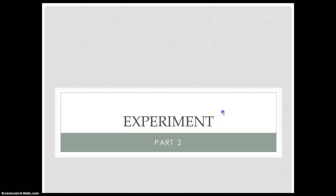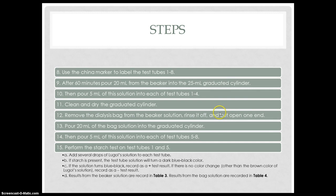This is part two of our experiment. We used China markers to label the test tubes 1 through 8. After 60 minutes of running the experiment, we poured 20 ml of solution from the beaker into the 25 ml graduated cylinder, then poured 5 ml of the solution into each of test tubes 1 through 4. We cleaned and dried the graduated cylinder, removed the dialysis bag from the beaker solution, rinsed it off, and cut open one end. Then we poured 20 ml of the bag solution into the graduated cylinder and poured 5 ml into each of test tubes 5 through 8.